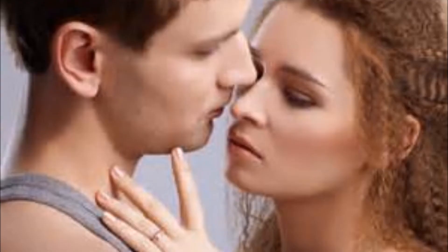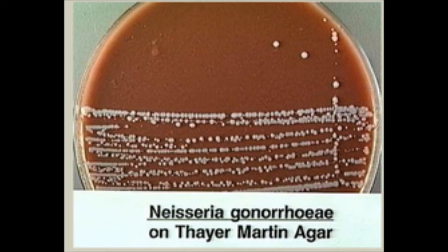Gonorrhea is transmitted sexually through vaginal, anal, and oral sexual activity. The typical incubation time is 2 to 7 days, but individuals can be infected and still remain asymptomatic. About 10% of males and 80% of females don't show symptoms of being infected by gonorrhea.